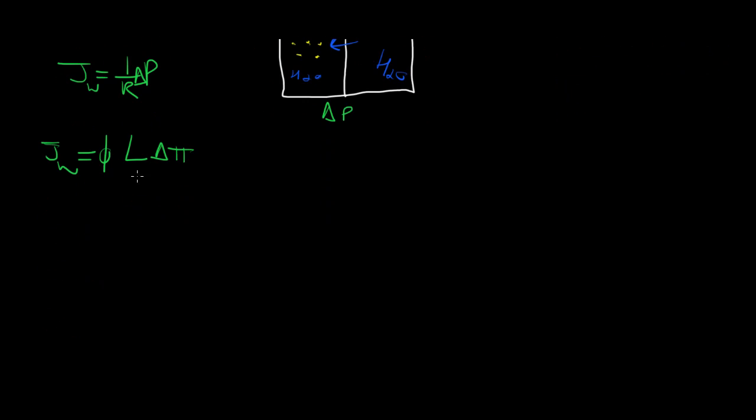Now you can see how conductivity was describing how the solvent, or water, was flowing across the membrane. Conductivity is a property of how well the solvent crosses the membrane. And the reflection coefficient is a property of the solute crossing the membrane.